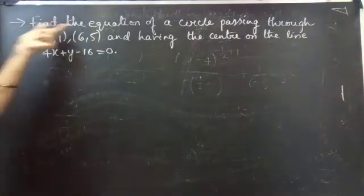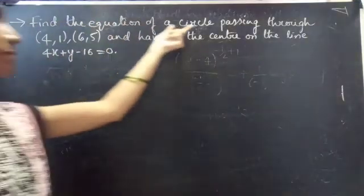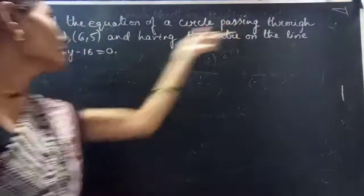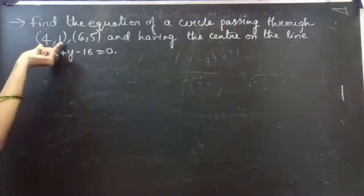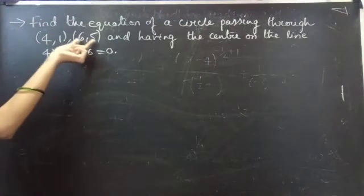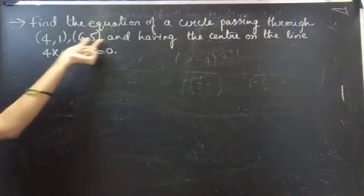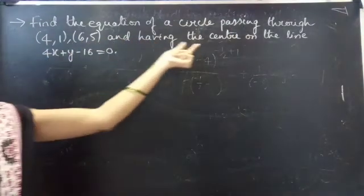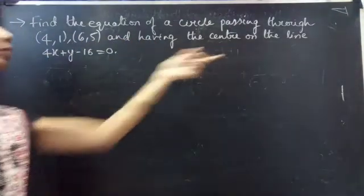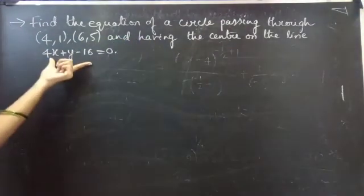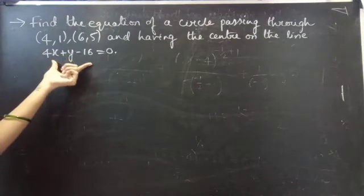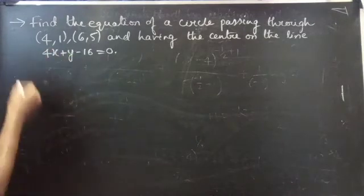Problem: Find the equation of a circle passing through the points (4, 1) and (6, 5) and having the center on the line 4x + y − 16 = 0. Solution.